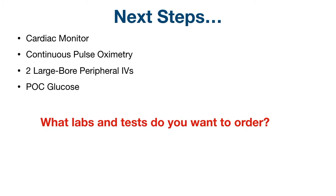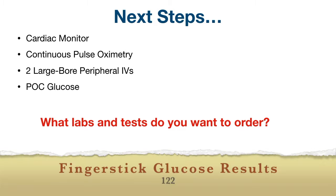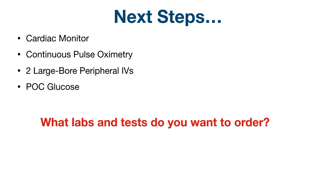The patient should be hooked up to cardiac monitor, continuous pulse oximetry, and two large bore peripheral IVs placed. Given the patient has a history of diabetes and is cool, clammy, and nauseous after raking the leaves, a quick point-of-care glucose should be obtained to get his blood sugar. Based on the information you have, stop the video and decide what your workup and next steps would be.